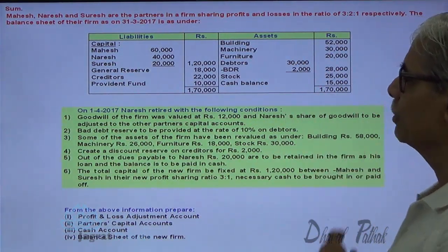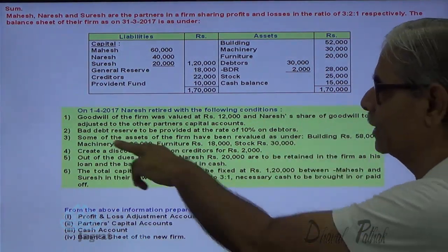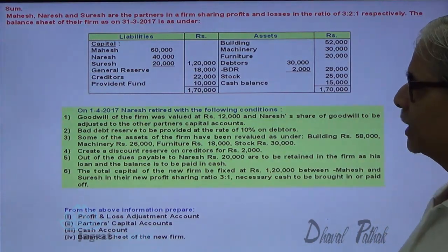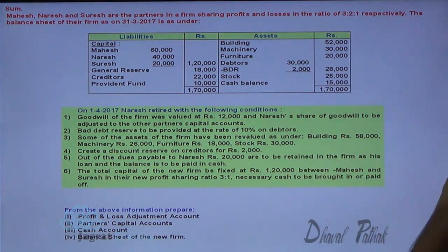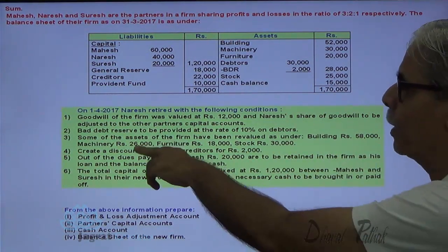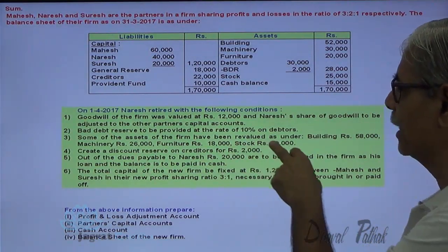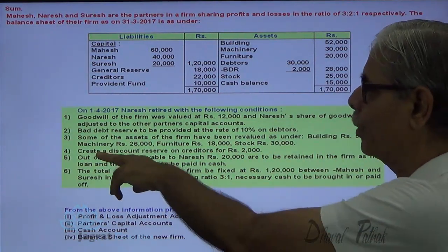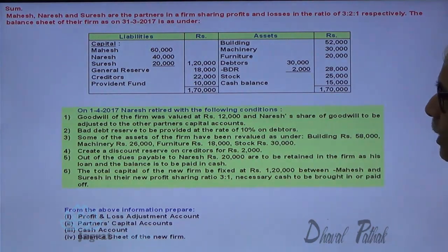Bad debt reserve is to be provided at the rate of 10% on debtors. Some of the assets of the firm have been revalued as under: building 58,000, machinery 26,000, furniture 18,000, stock 30,000. Also, create a discount reserve on creditors for 2,000.